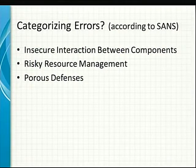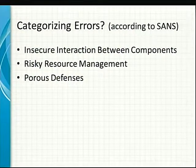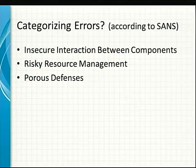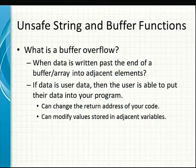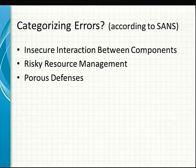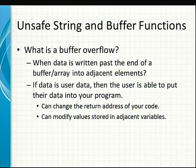If we look at different errors and vulnerabilities, we see a common categorization that can be used. We can categorize them in one of three ways: insecure interaction between components of your system, risky resource management, or porous defenses. A lot of these vulnerabilities seen in the wild can be broken up into these components. One of these, which fits under risky resource management, is unsafe string and buffer functions.